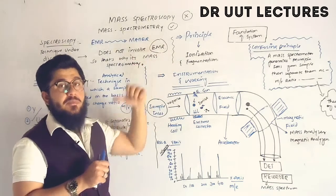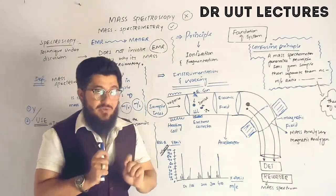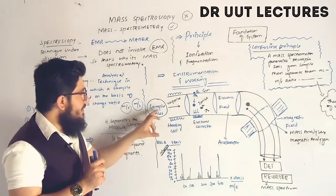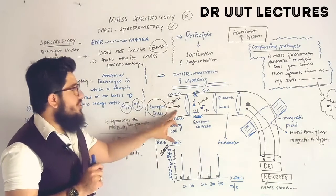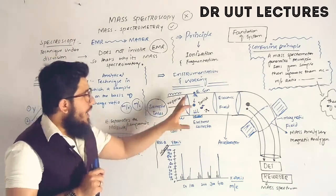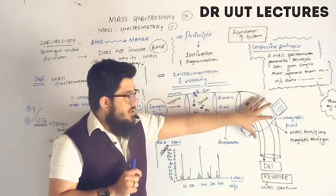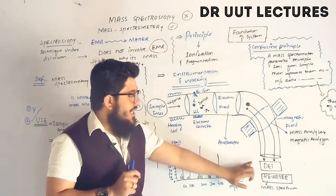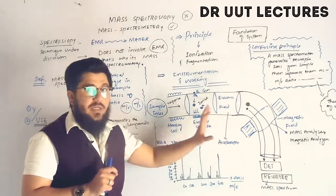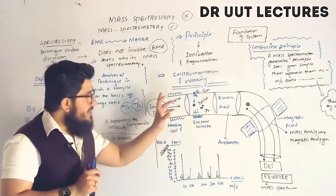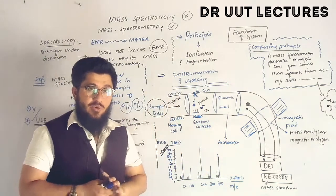For the instrumentation of mass spectrometry, we have the following components: sample inlet, vaporization chamber, ionization chamber, electric field chamber, mass analyzer chamber, detector, and recorder.